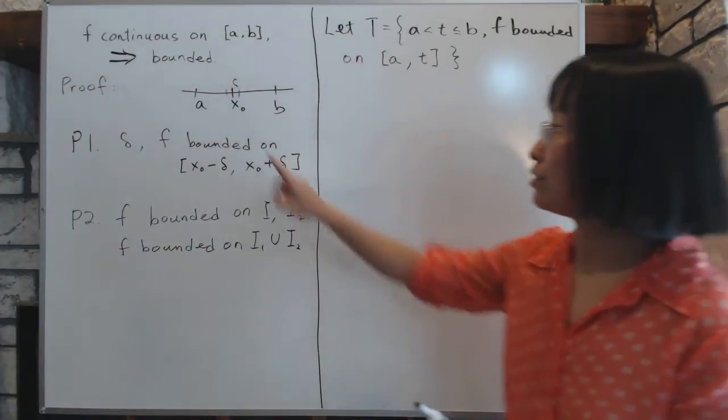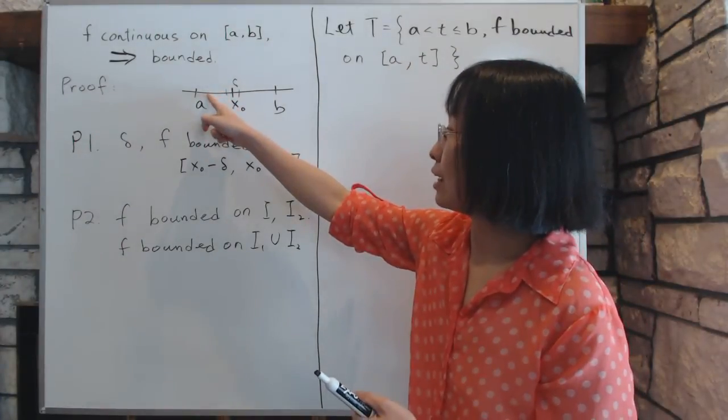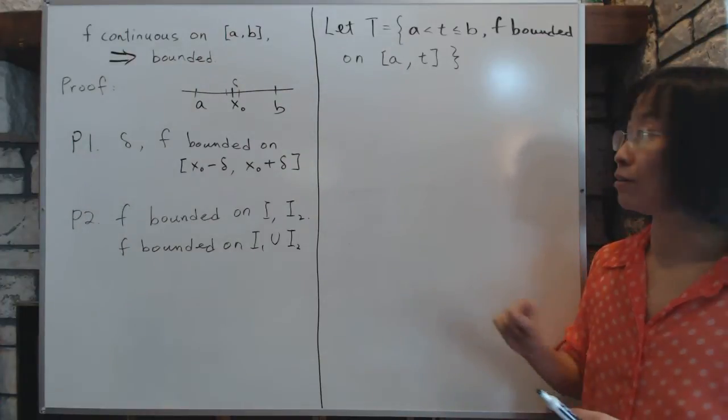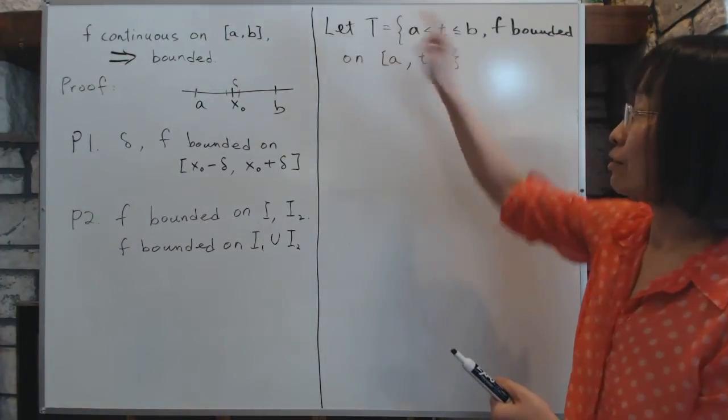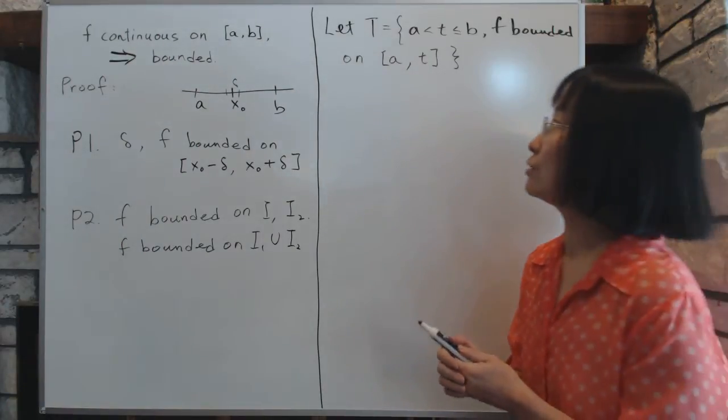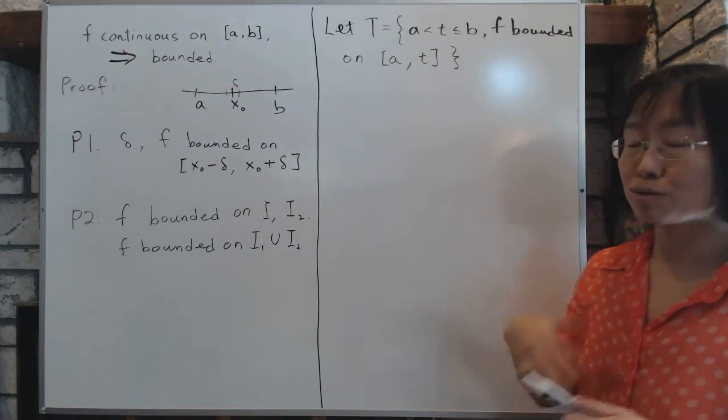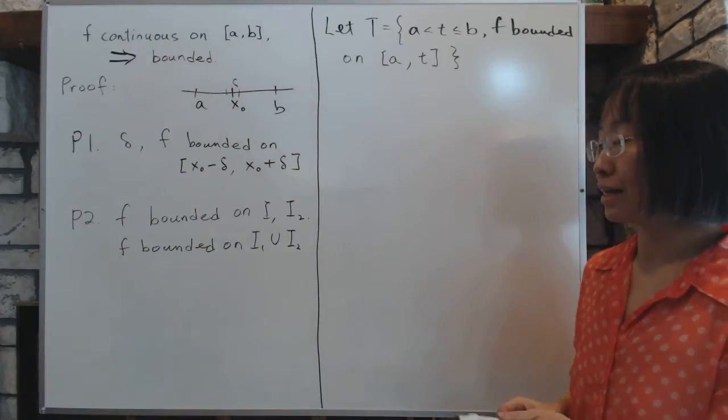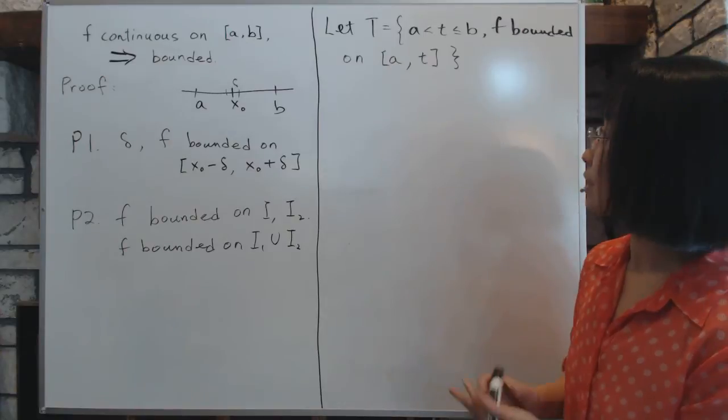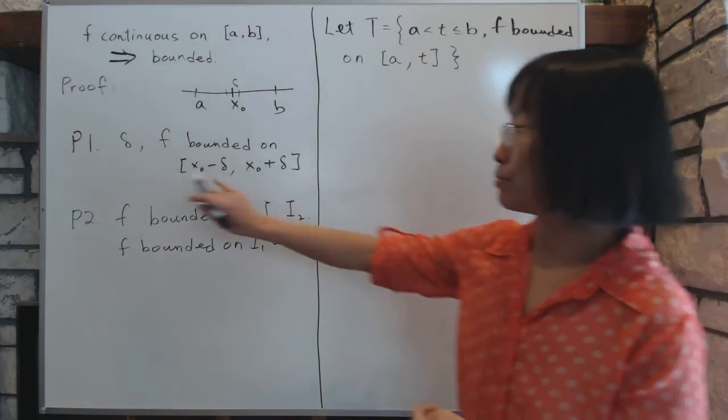So any t you'll find right here, from a all the way to t, f has to be bounded on that interval. And if there's such a t, then it will belong to the set T. Now the question, the first thing you always ask yourself when you define a set is whether the set is empty. Is there going to be anything in it? How can you show that there's anything in it? So we will prove that the set T is not empty by principle one.